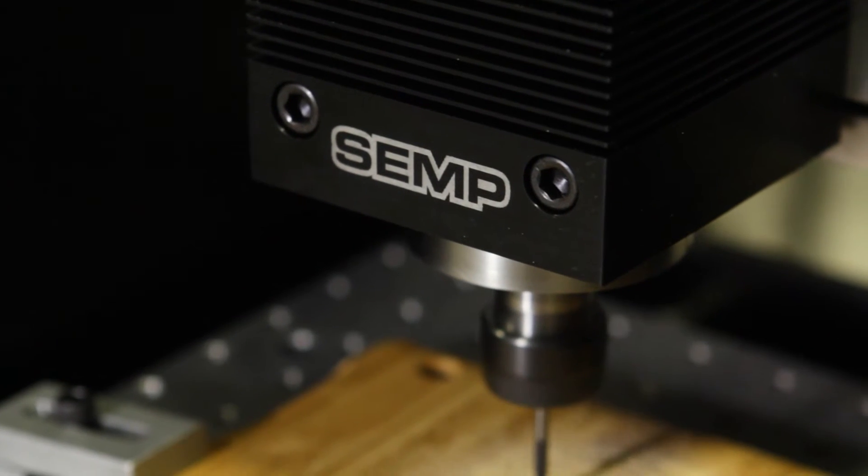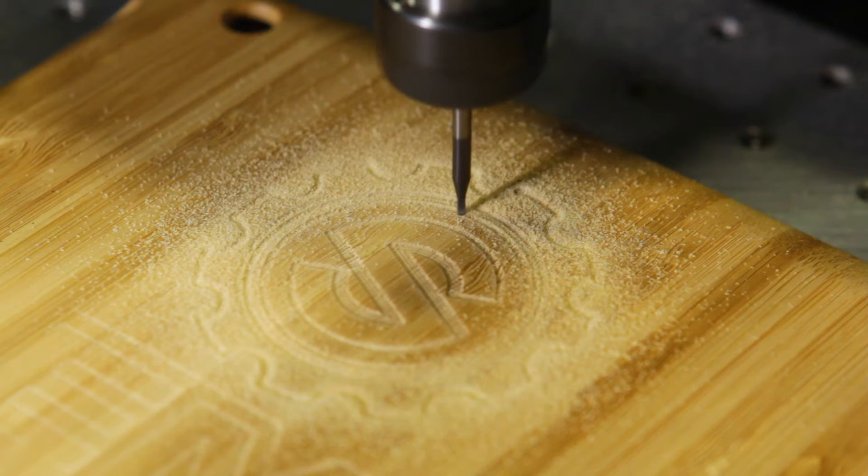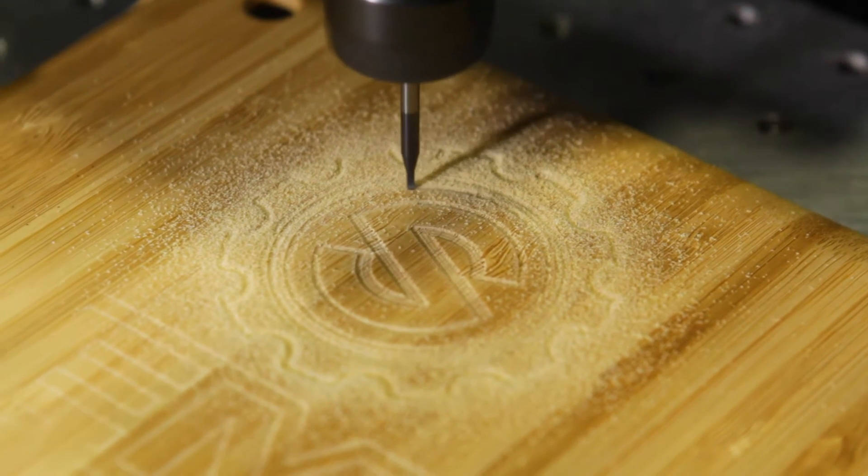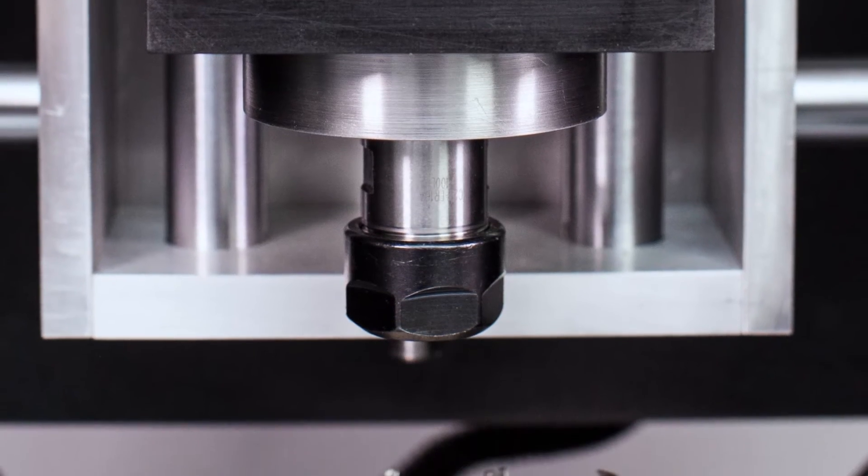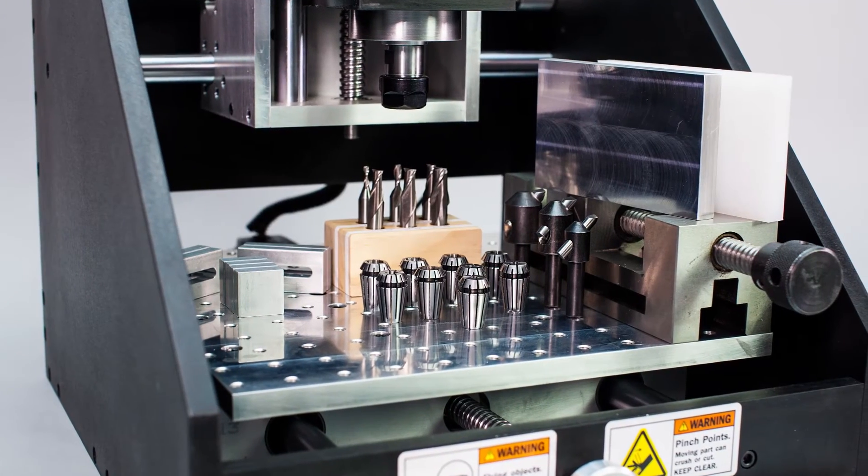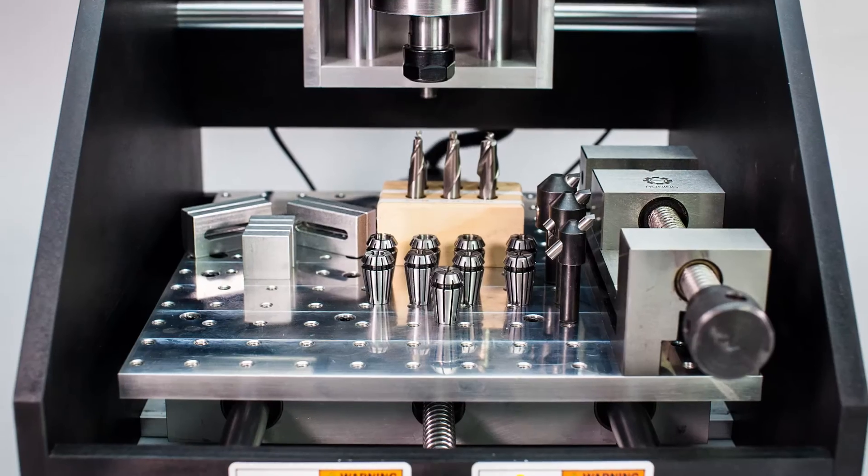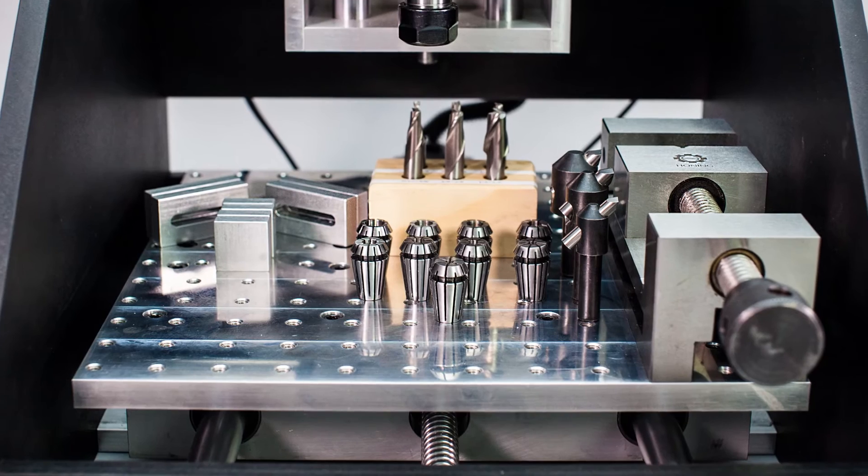The DTM-280 comes turnkey ready with no additional hardware or assembly required. Equipped with a custom spindle, it includes a 9-piece ER-16 collet system capable of accepting up to 3/8-inch tooling.